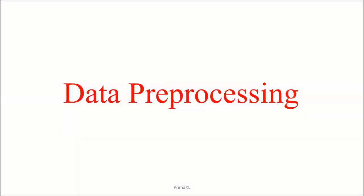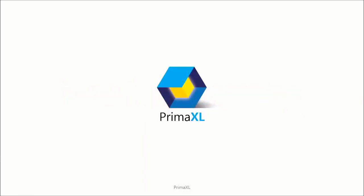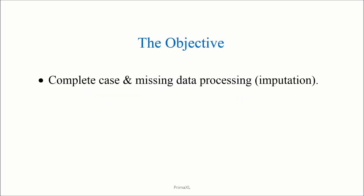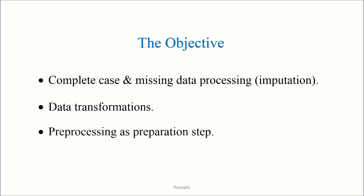Hello, welcome to a new episode. Today's topic is data pre-processing: missing data and transformations. One of the objectives is to explore the different ways of processing the missing data. We'll apply transformations to the data as part of the so-called pre-processing. Pre-processing is the preparation of the raw data before we apply the actual statistical method.